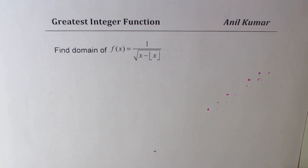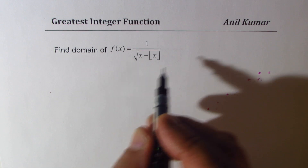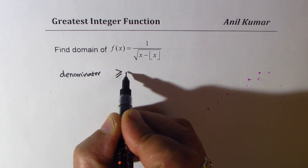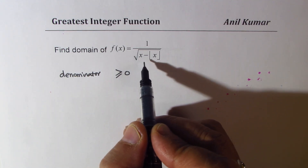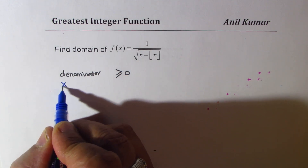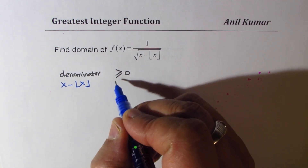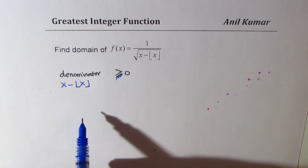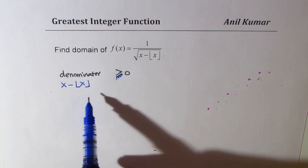For f(x) = 1 / √(x − ⌊x⌋), the denominator must be greater than zero — it cannot be zero because we cannot divide by zero, and there is a square root. So the condition is: x minus the greatest integer function of x must be strictly greater than 0. This also means we cannot have x less than 0, so x must be greater than 0.